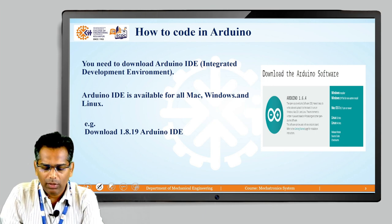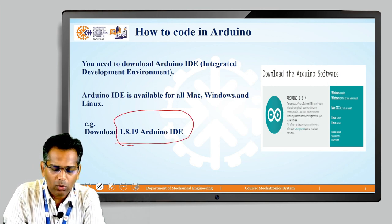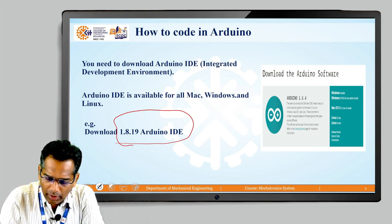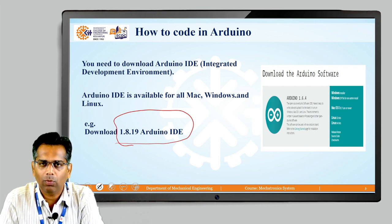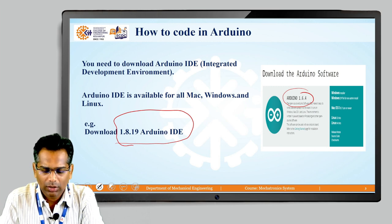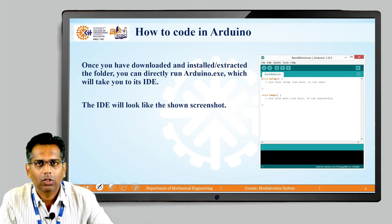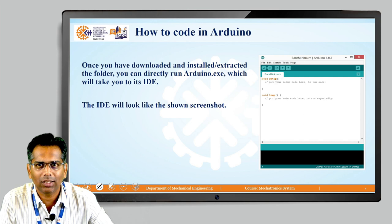Version 1.8.19 is the Arduino IDE number. If you see at the right side, it will show Arduino IDE version 1.4 and 6.4 — there are different versions available for this Arduino IDE. For this example, just download version 1.8.19. Once you download this IDE, it will show you this screenshot, which we have already seen in the IDE session.